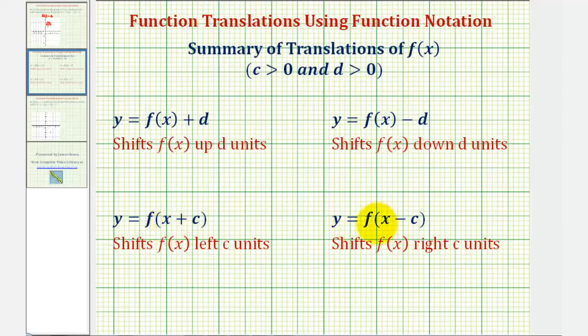And then finally we have y equals f(x - c). Notice here we're subtracting c from x, and therefore we have to use larger values of x to produce the same inputs as the basic function f(x). So because we're using larger values of x, it would shift the graph right c units.